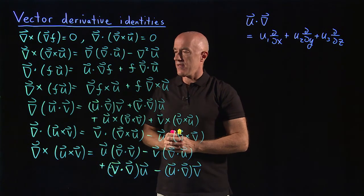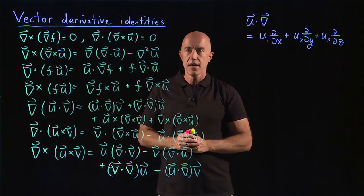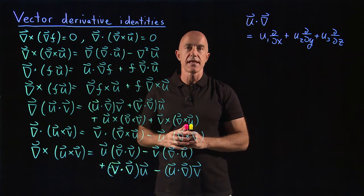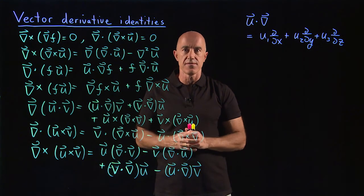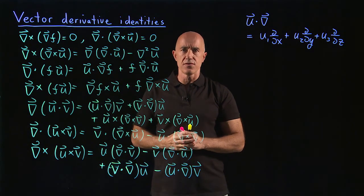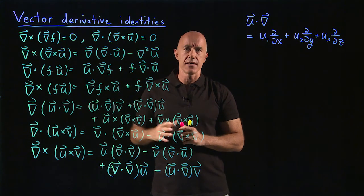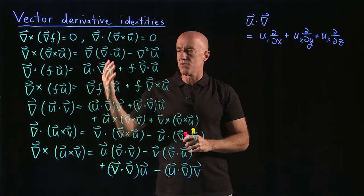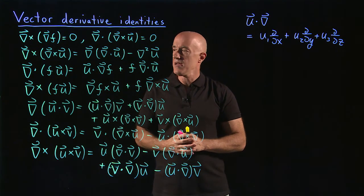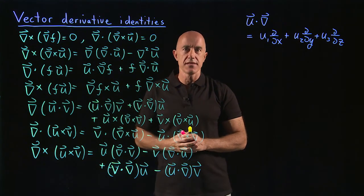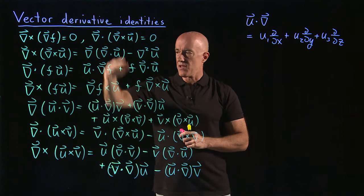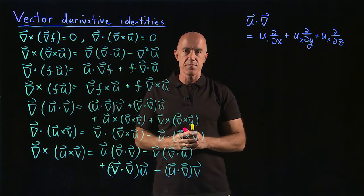So we have seven or eight different vector identities, and they all find some use when you study advanced electricity and magnetism. We'll use one of these identities to derive the existence of light from Maxwell's equations. In the next video, I'll step you through how to derive these types of identities and give you some problems to practice at home. Typically, you don't memorize these, though it's nice to know that the curl of a gradient is zero and the divergence of a curl is zero. The others you would typically look up in a textbook as you need them.